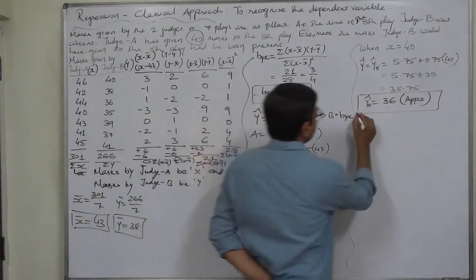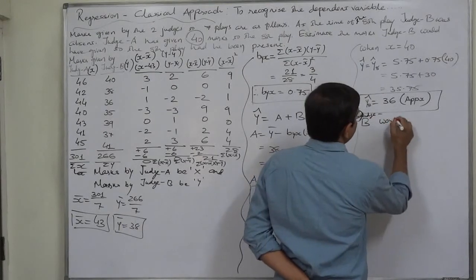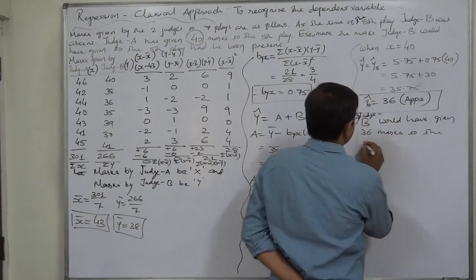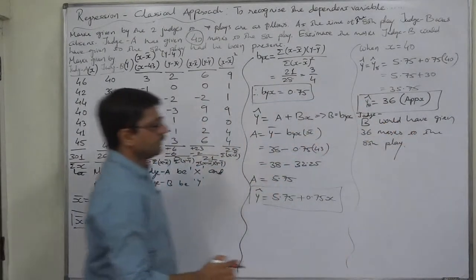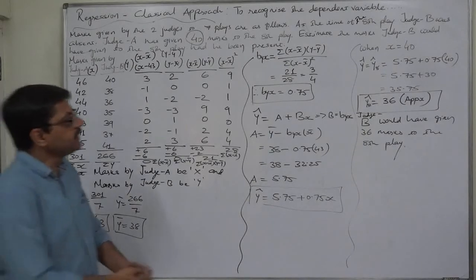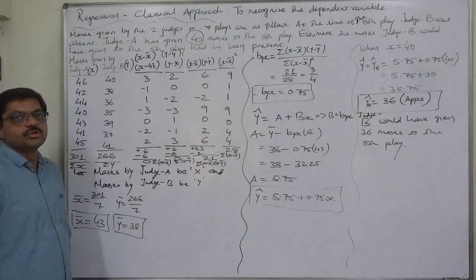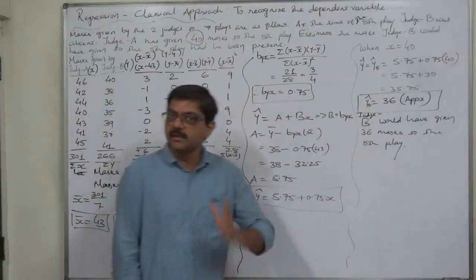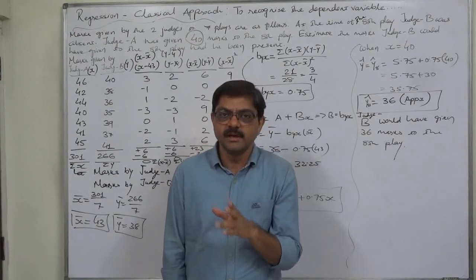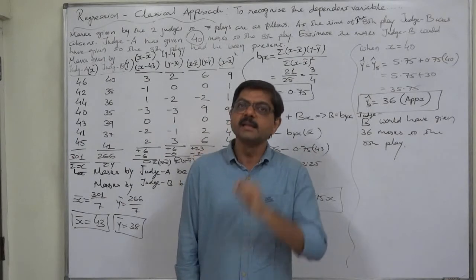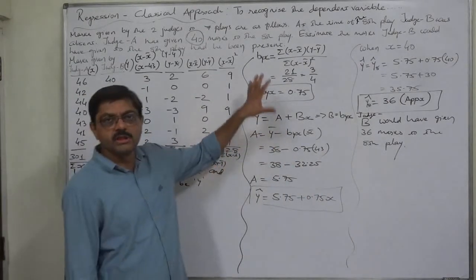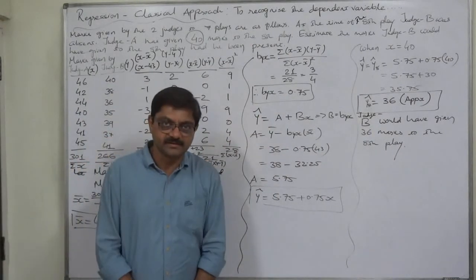That means Judge B would have given 36 marks to the eighth play. On the basis of the language used in the question, we first determined which series should be treated as the dependent variable. The rule is simple: the variable for which we need to find the estimated value becomes the dependent variable. In this kind of case, we don't need to find both coefficients of regression or both lines of regression. That's it. Thank you very much.